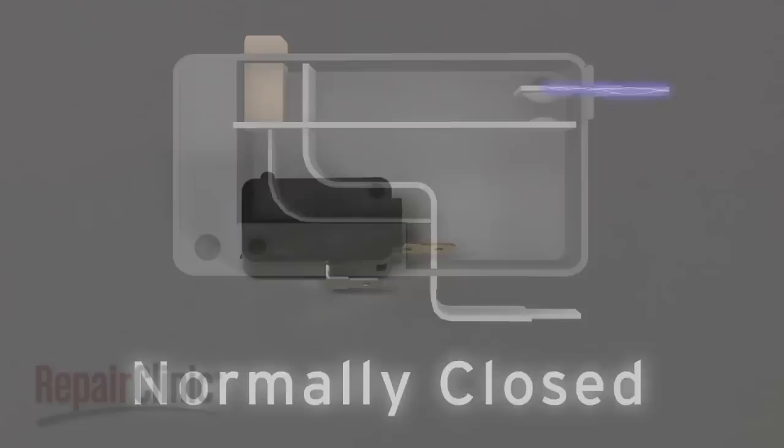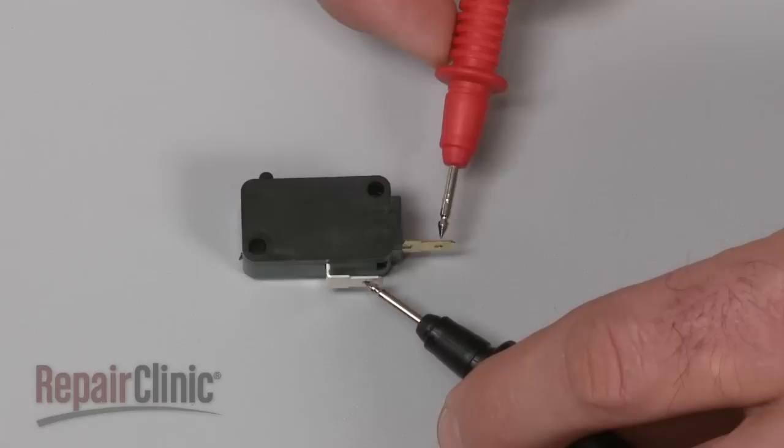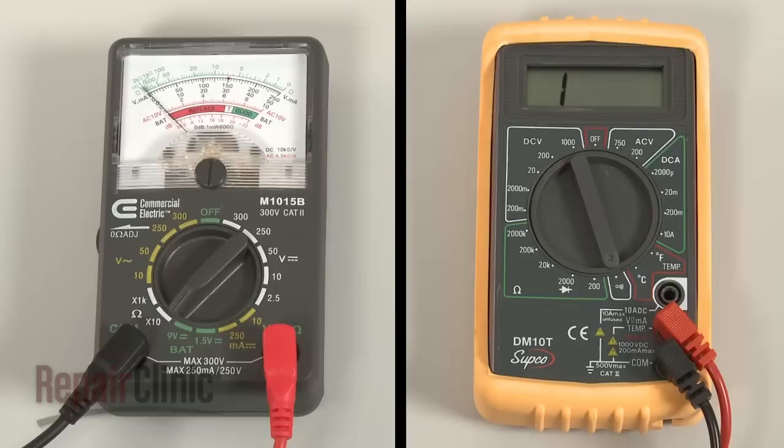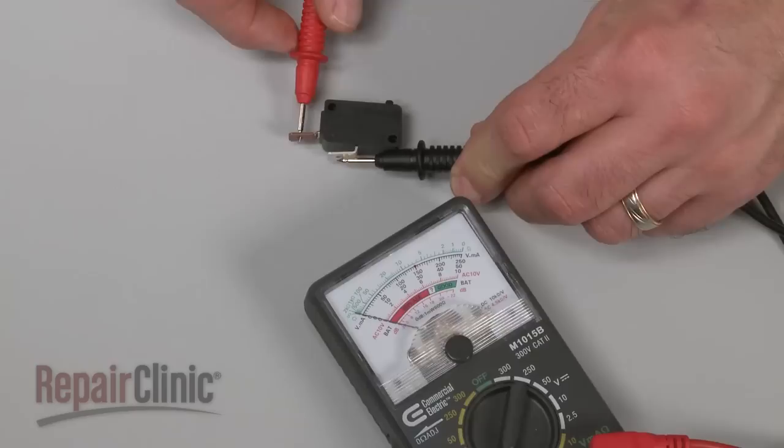In this example, we will test a normally open switch. Use a probe to touch one of the terminals, and the other probe to touch the second terminal. Now actuate the switch. If the meter reading shows zero ohms of resistance, the switch has continuity.